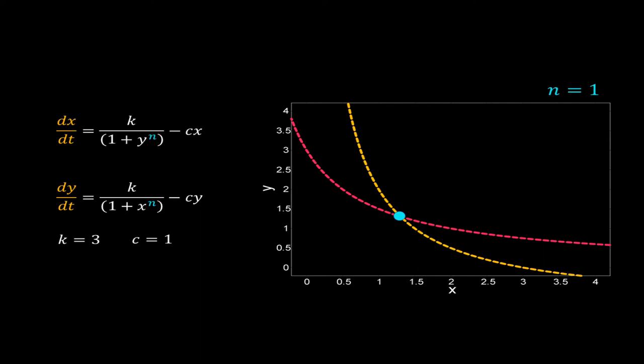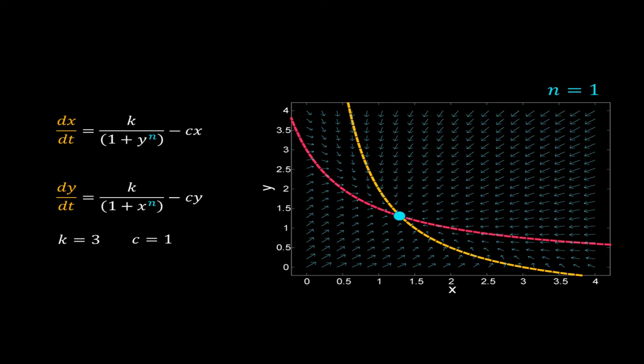As we vary the value of n, the yellow and red lines are the x and y nullclines. Here I have considered n equal to 1. The x and y nullclines have intersected at the blue dot only, so for n equal to 1 this system has only one steady state. Let's check the stability of this steady state. I have drawn the complete phase portrait — the arrows near the steady state, that blue dot, are pointing to the steady state, so this steady state is stable.